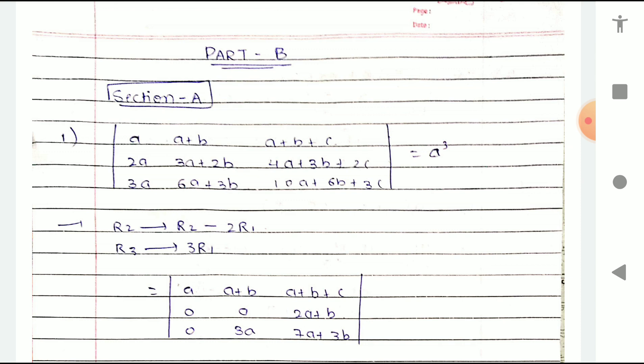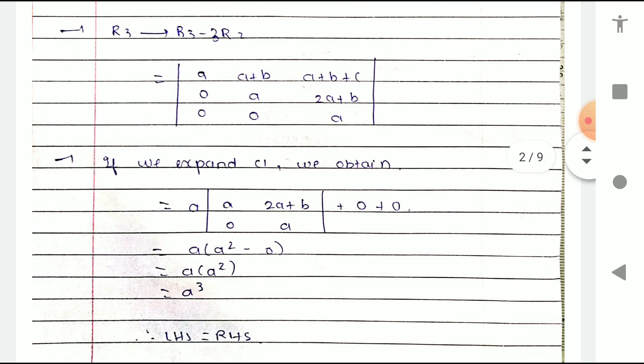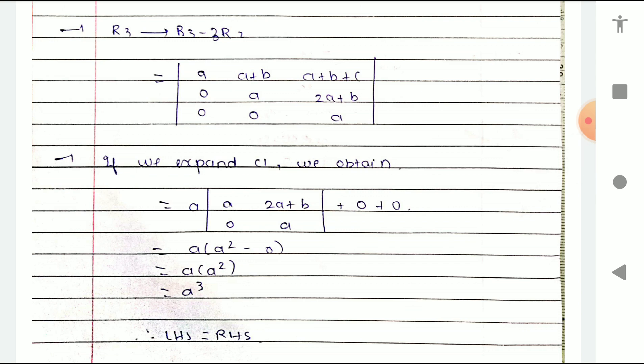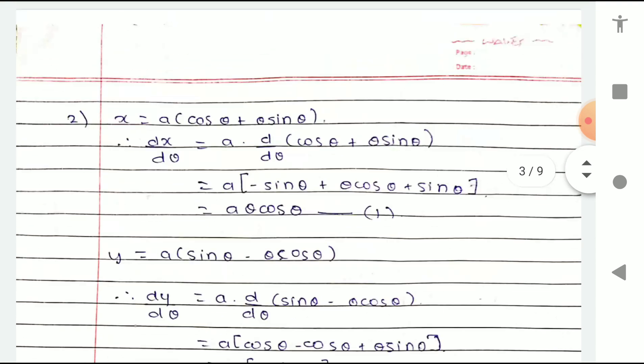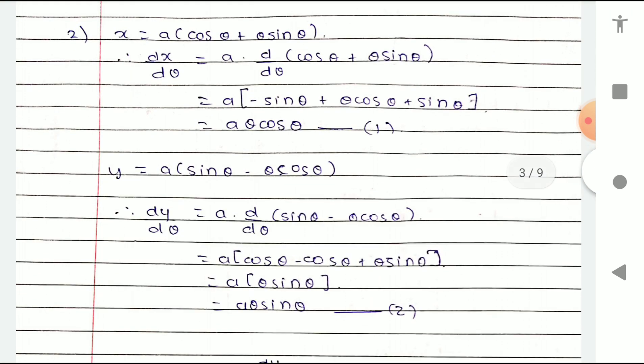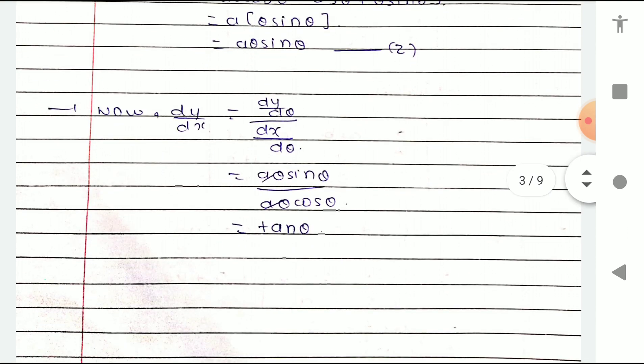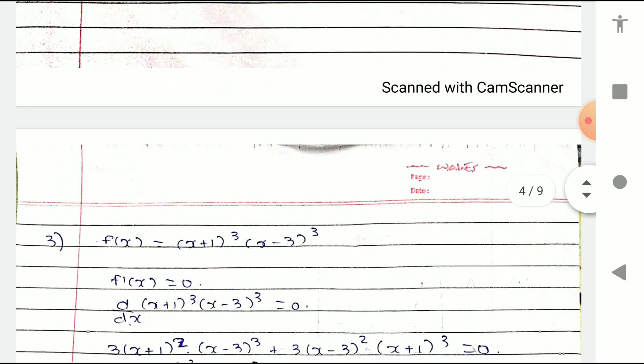In the solution for Part B Question 1, we apply the row operation R2 = R2 − 2R1, R3 = 3R1. You can see the paper on screen — LHS is equal to RHS. For Question 2, x = a·cosθ + b·sinθ; you can write down the solution shown.